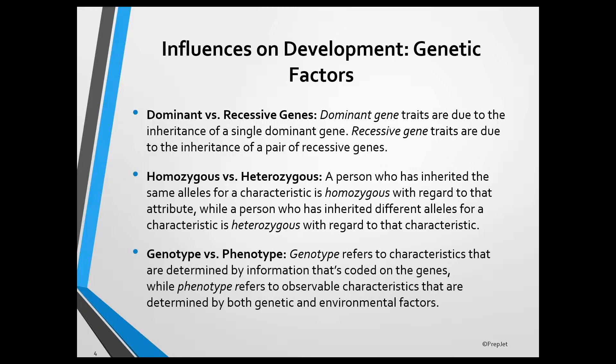Homozygous and heterozygous are terms related to genetic inheritance that you want to be familiar with. Alleles are the alternate forms of a gene that controls a particular trait. When the alleles for a trait that a child inherits from both parents are the same — for example, they're both for brown eyes — the child is homozygous for eye color. In contrast, when the alleles for a trait that a child inherits from his or her parents differ, the child is heterozygous with regard to that trait. If a child inherits the allele for brown eyes from one parent and the allele for green eyes from the other parent, the child is heterozygous for eye color.